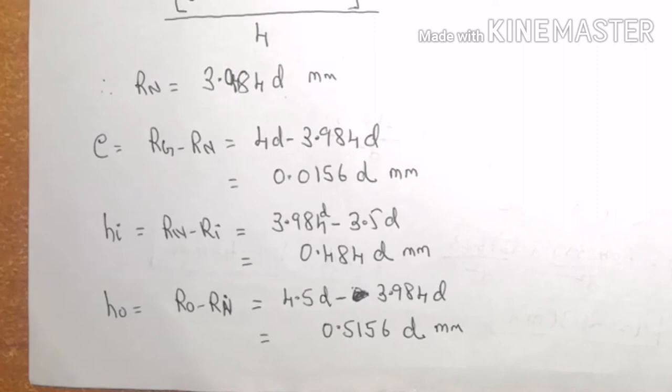You can see that the unknown of the problem has changed. In previous case, it was asked to determine the load carrying capacity of the hook. But in this problem, we are required to find out what is the dimension of the link. Then too, I am following the same procedure. So whatever be the unknown, the procedure will remain same.